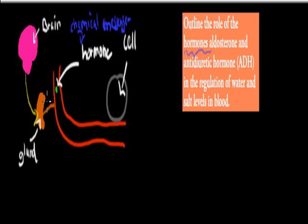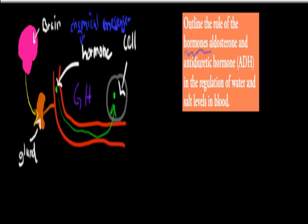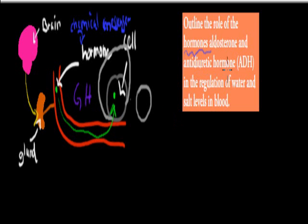So if you imagine this green dot here is the hormone, it'll travel all the way to the cell, go into the cell if it's a fat-based hormone, and then tell the cell what to do. For example, if this were growth hormone, GH, it would tell the cell to grow or to duplicate. That's just one example. A hormone is something produced by glands that travels in the bloodstream to cells and tells them what to do — that's why they're called chemical messengers.